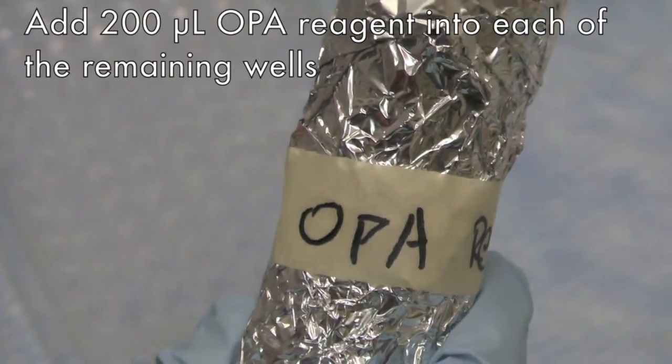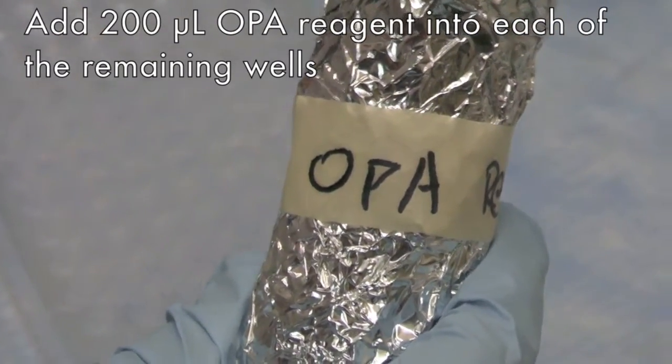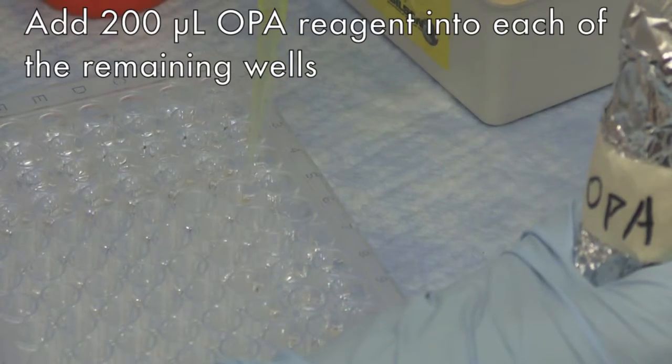Then, pipette 200 microliters of OPA reagent into the remaining wells containing sample or standard.